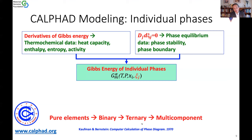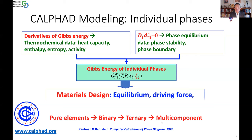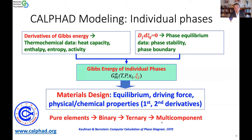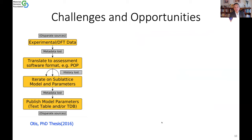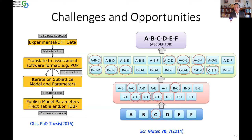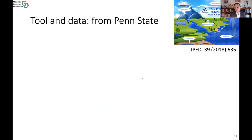We start with pure elements, then binary, ternary, and multi-component systems. Commercial databases can include 20 or even 30 elements. Once you have these databases, you start material design: you can calculate equilibrium, driving force, and all physical and chemical properties through first and second derivatives. That's what we call the material genome. The challenge is that the tools we have now are insufficient because it's a one-way process — if you want to modify one element in the beginning, you have to change many things.